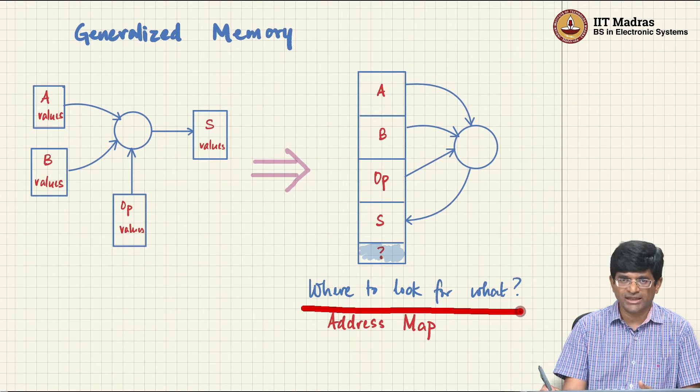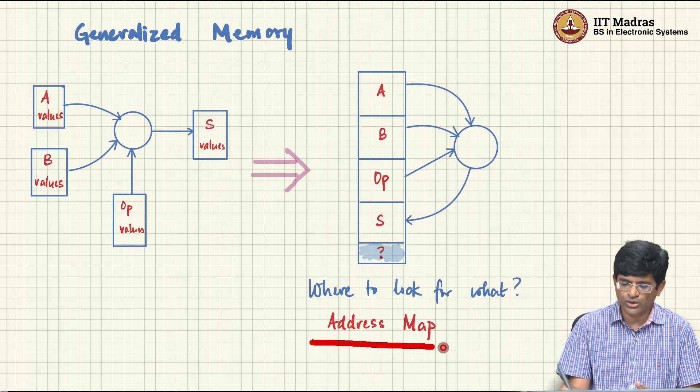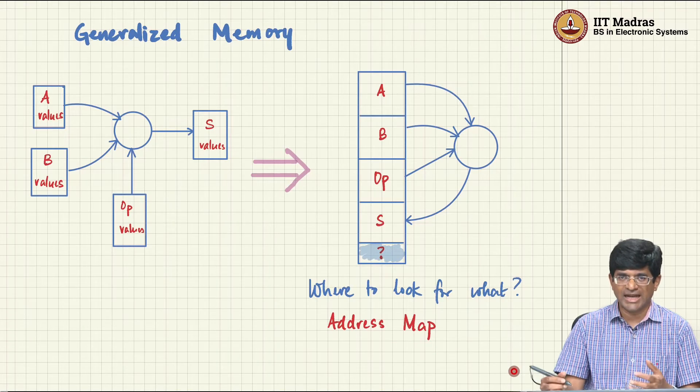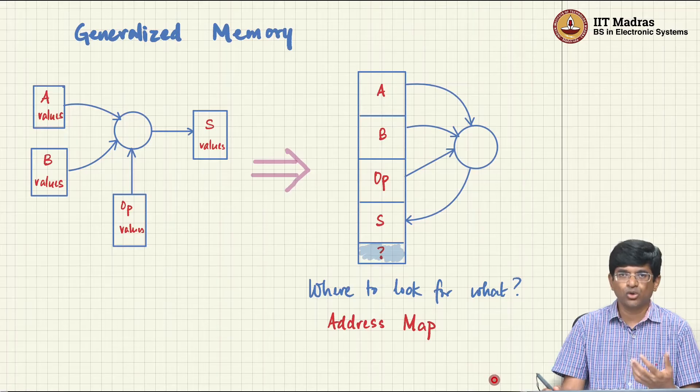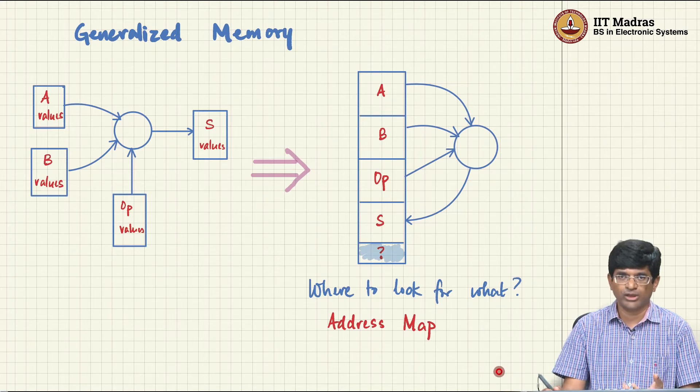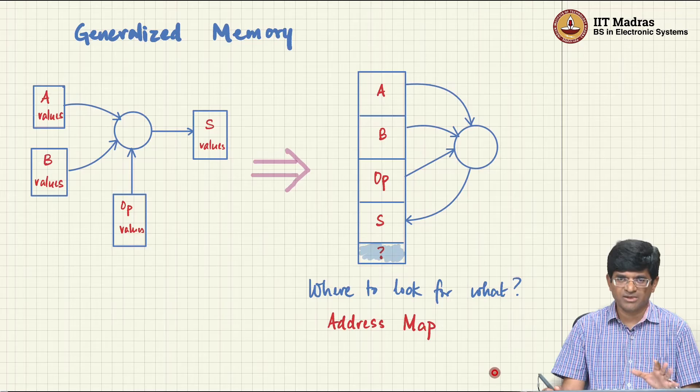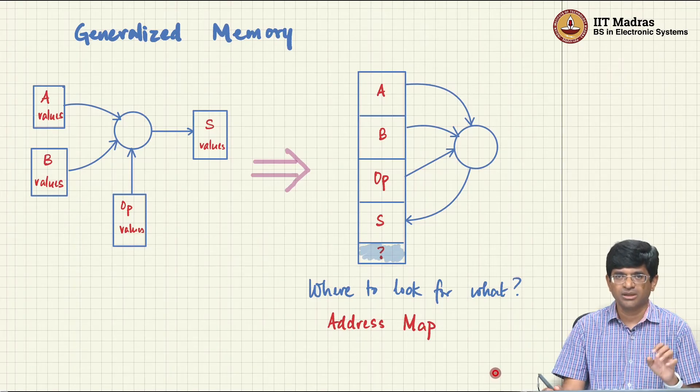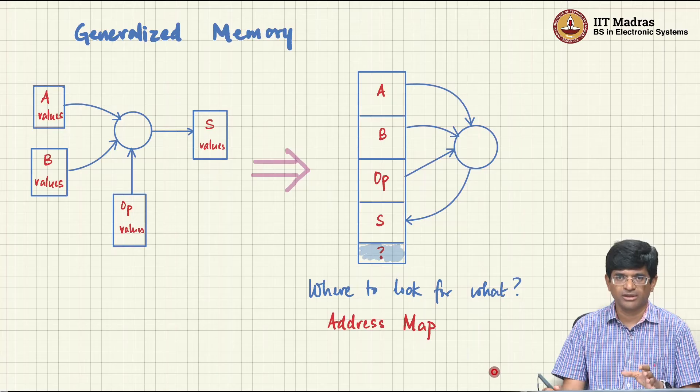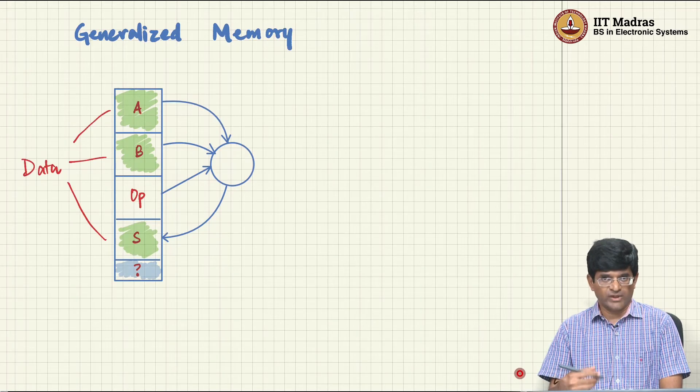Where do I look for what kind of information? That has to be known. I cannot just blindly go in there and assume that I know exactly what is going on. This information about where is A, where is B, where are the operations, where are the results to be stored is what is usually called the address map. And it is not obvious what the address map should be, this is highly application dependent. So as and when I build up a computer I need to know what kind of address map I am constructing. Of course, if I am building the computer I have control over it. So I can choose where to put A, where to put B, where to put operations and so on. If somebody else built the computer for me they will probably give me some specific guidelines saying put your operations over here, this is where you store your data and maybe a couple of restrictions of that sort.